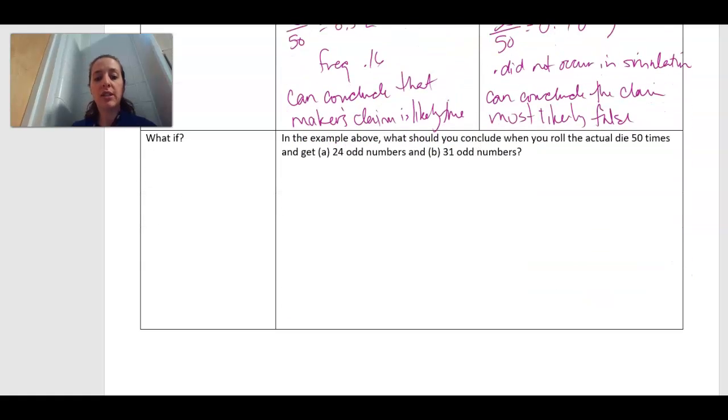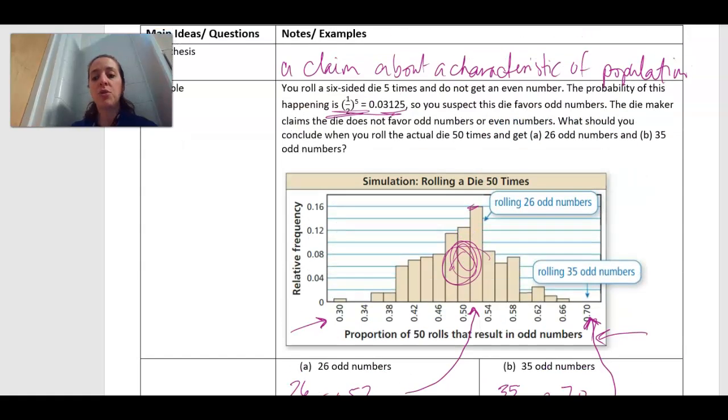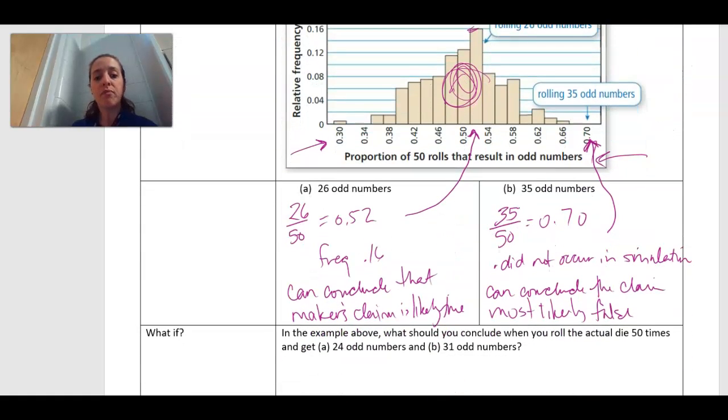So now I want you to look down at this what if. We're using the same simulation above, but what happens when we get 24 odd numbers? What about 31 odd numbers? Can you do what we just did here with these values of odd numbers and kind of continue that? So now once you get through that, it's not too bad, right? So now you can go ahead and work on the homework for this section and really put this into practice. And as always, let me know when you get stuck or have any questions.